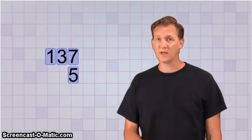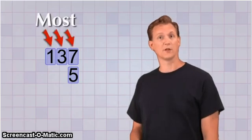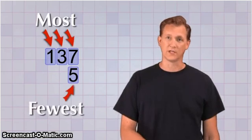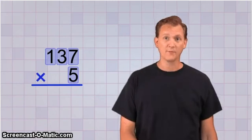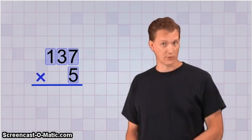But, it's always best to put the number with the most digits on the top, and the one with the fewest digits on the bottom. There, now we draw our answer line below, and we put our times symbol to the left so we don't forget that we're multiplying.